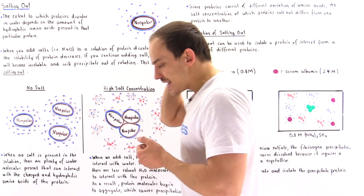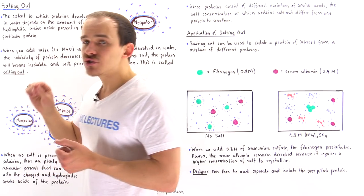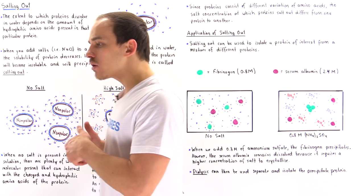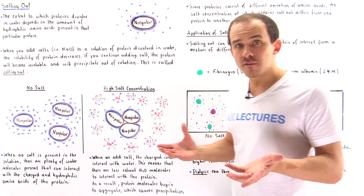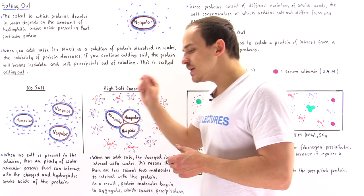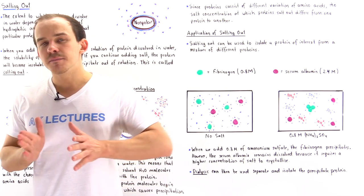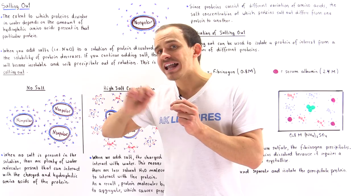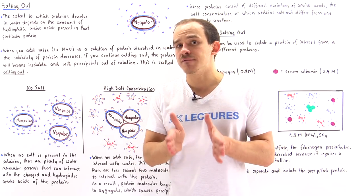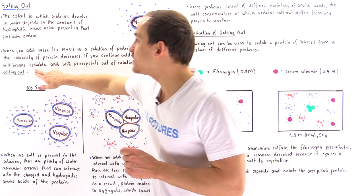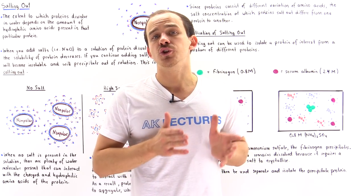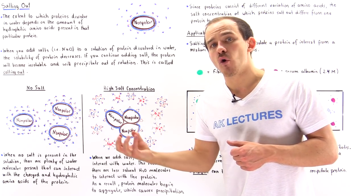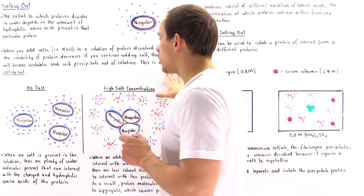Now, what happens when we add salt into our pure water solution that contains dissolved protein molecules? We can add, for example, sodium chloride or ammonium sulfate. As soon as we begin to add salt, the solubility of that protein in the water will begin to decrease. If we continue adding more salt, eventually we reach a certain specific concentration at which the protein becomes insoluble in the solution. The protein will begin to precipitate out of the solution, crystallize and form the solid state. This is what we call salting out.